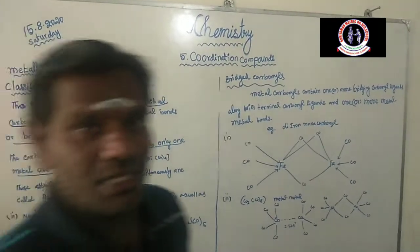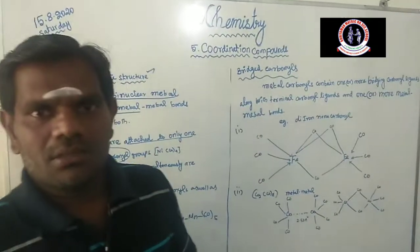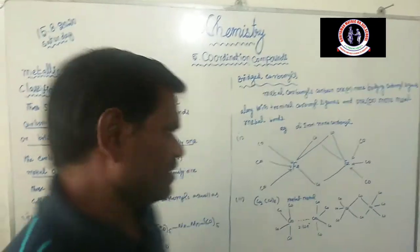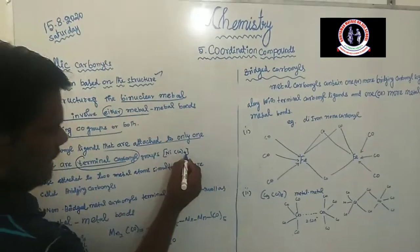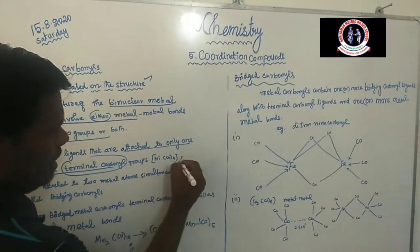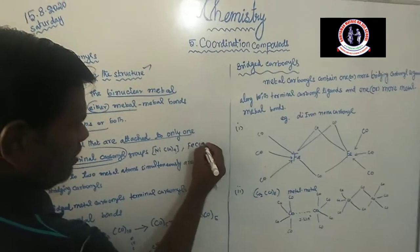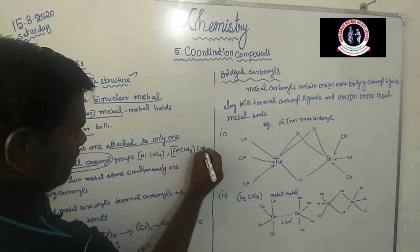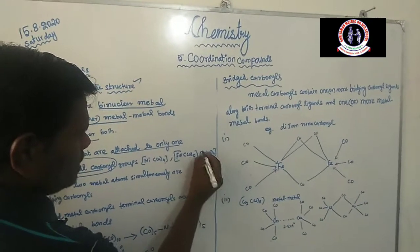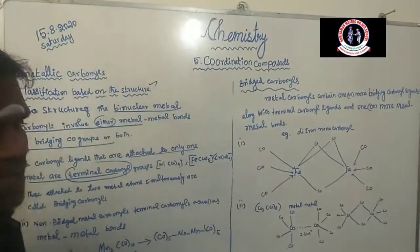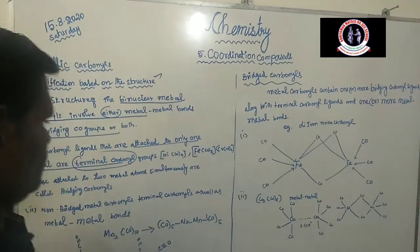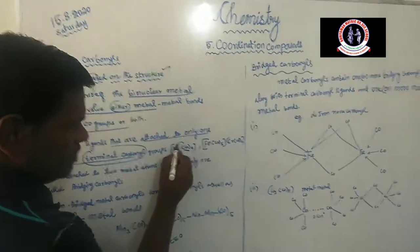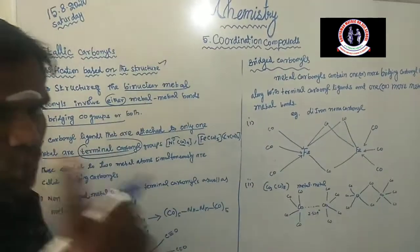What is meant by terminal carbonyl? The carbonyl group is attached with only one metal atom. For example, tetracarbonyl nickel, pentacarbonyl iron, and hexacarbonyl chromium are the best examples of terminal carbonyls, because the ligand is attached with only one metal atom.